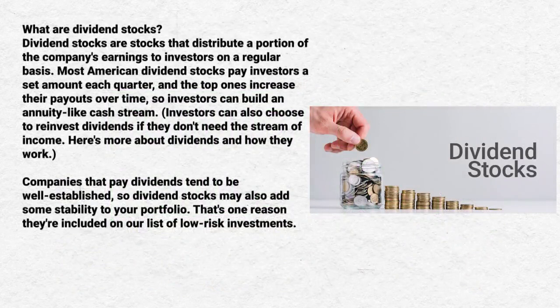Dividend stocks are stocks that distribute a portion of the company's earnings to investors on a regular basis. Most American dividend stocks pay investors a set amount each quarter, and the top ones increase your payout over time, so investors can build an annuity-like cash stream. Investors can also choose to reinvest dividends if they don't need a stream of income.